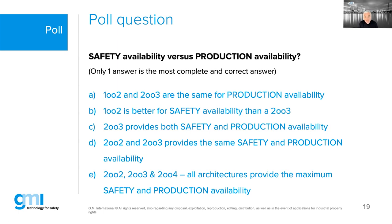The majority selected Answer C — '2oo3 provides both safety and production availability' — and that is indeed the most correct and complete answer. Answer B is not correct: while 1oo2 and 2oo3 have the same HFT from a safety standpoint, they are not equivalent. Answer A is wrong — 1oo2 and 2oo3 are not the same for production availability, which is the whole topic of this webinar. Answer D is also wrong: 2oo2 and 2oo3 have the same production availability but different safety availability.